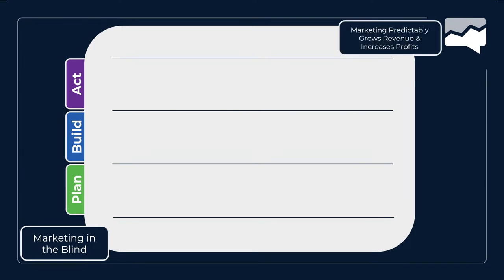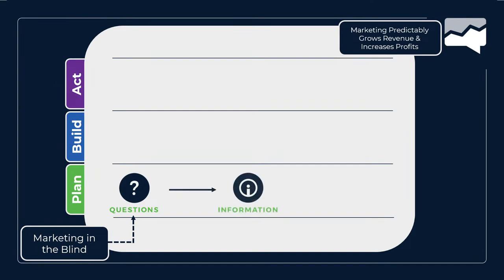You should be doing this in your own organization — you plan things out, you build things out, then you act upon what you've built. When we're marketers, we typically start doing a whole lot of guessing. Our goal is to get to where our marketing is predictably growing revenue and increasing our profits. So how do we do that? Plan, build, and act.